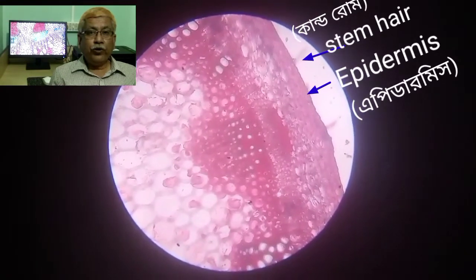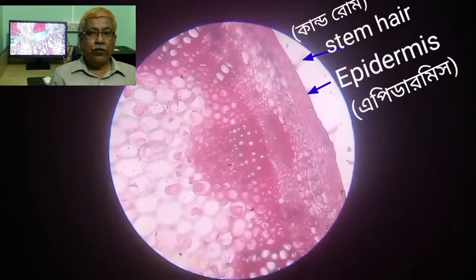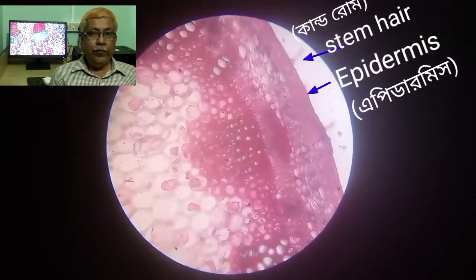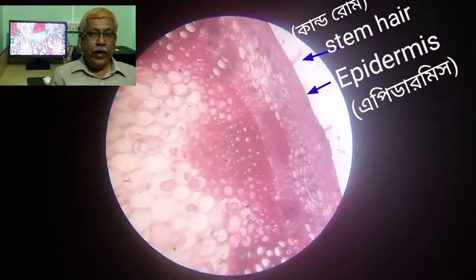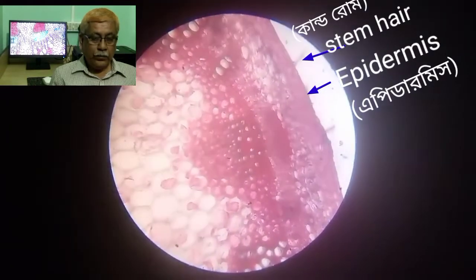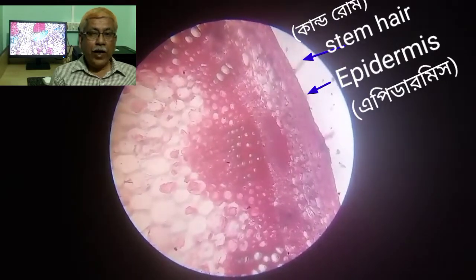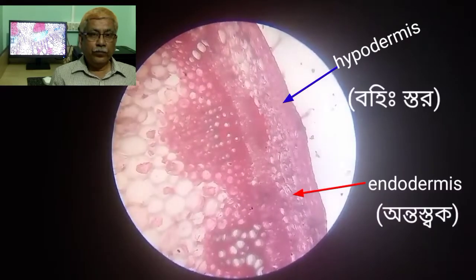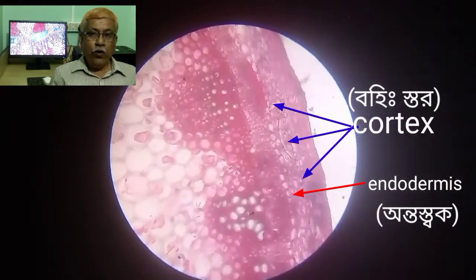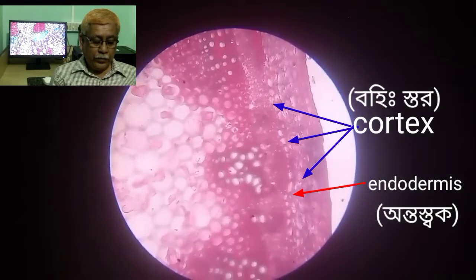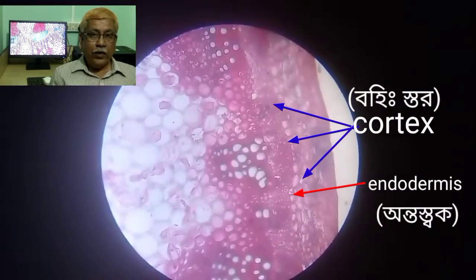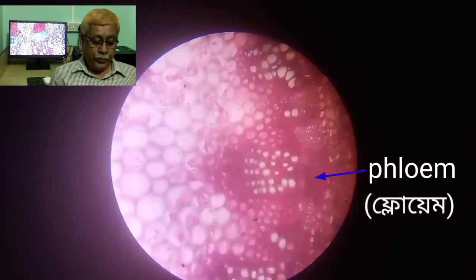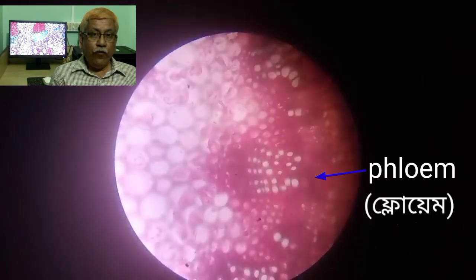TS of a portion of dicot stem — sunflower stem — under low power of the microscope. The stem is visible here and epidermis is clearly visible. Look at the slide. Hypodermis, endodermis, and cortex — these regions are clearly visible.